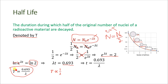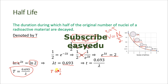The 0.693 is a numerical constant. From this equation we can conclude that half-life is inversely proportional to the decay constant lambda. That's it — thank you for watching, and do not forget to subscribe for more videos.